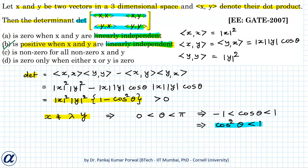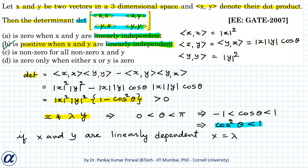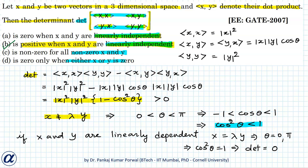Now, why are C and D incorrect? When vectors x and y are linearly dependent, I can write x as lambda y, which implies the angle between x and y will be either 0 or pi, since the vectors will be either parallel or anti-parallel. In that case, cos squared theta will be 1, and the determinant of the matrix will be 0. So we can have determinant equals 0 for non-zero x and y when they are linearly dependent — therefore C is false, and x or y do not have to be zero for the determinant to be 0, so D is also false.